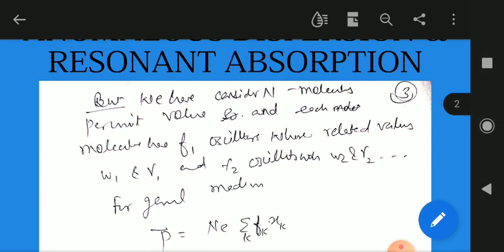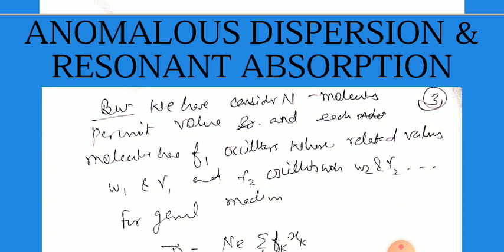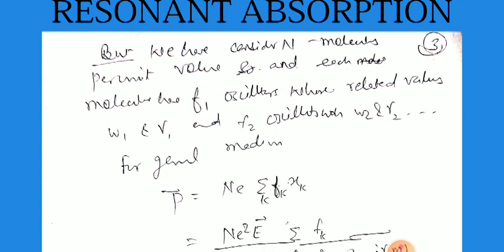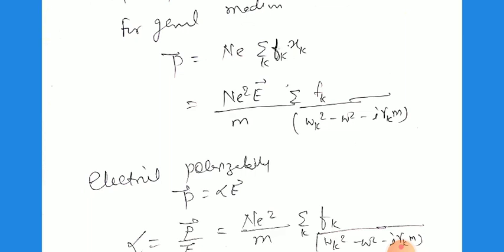In reality there are N molecules per unit volume, and each molecule has multiple oscillators: F₁ oscillators with frequency ω₁ and damping γ₁, F₂ oscillators with frequency ω₂ and damping γ₂, and so on, since different materials have different damping coefficients and frequencies. For a general medium, P = Ne²/m · Σₖ Fₖ / (ωₖ² − ω² − iγₖω).